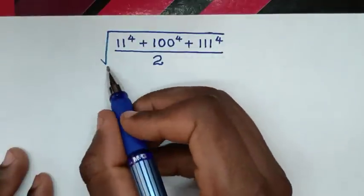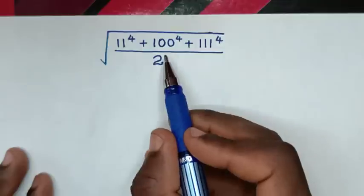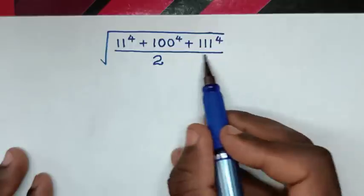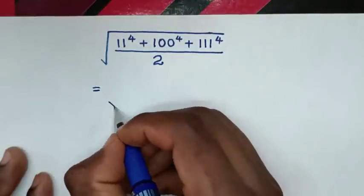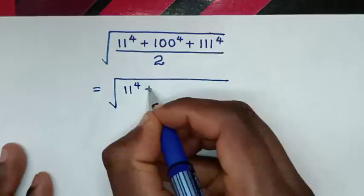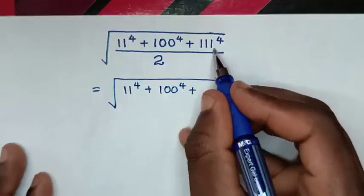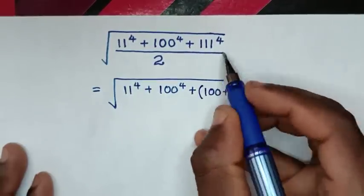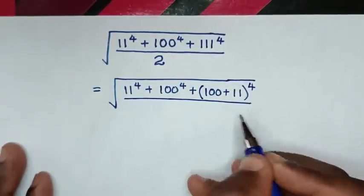Hello, how to solve square root of 11 power 4 plus 100 power 4 plus 111 power 4, over 2? It will be equal to square root of 11 power 4 plus 100 power 4 plus 111, which is the same as 100 plus 11, bracket power 4, then over 2.